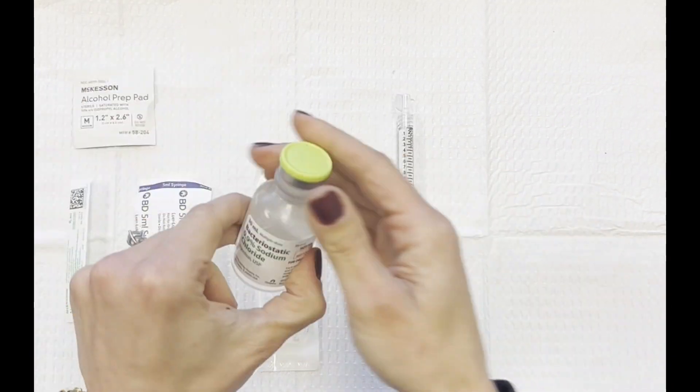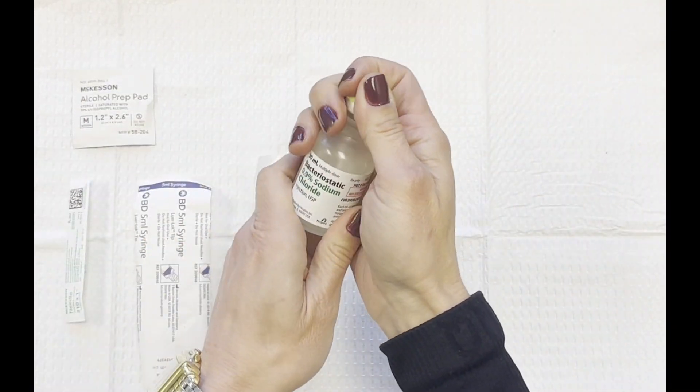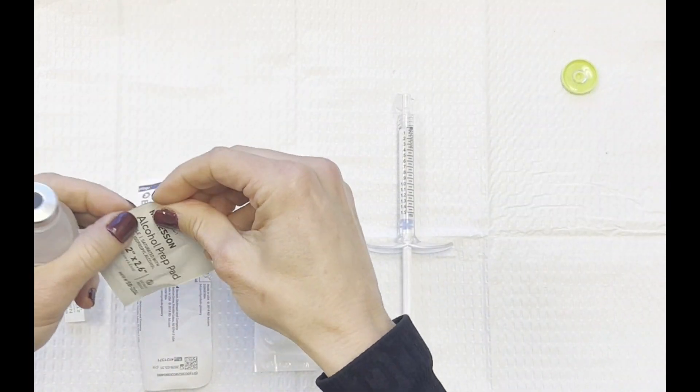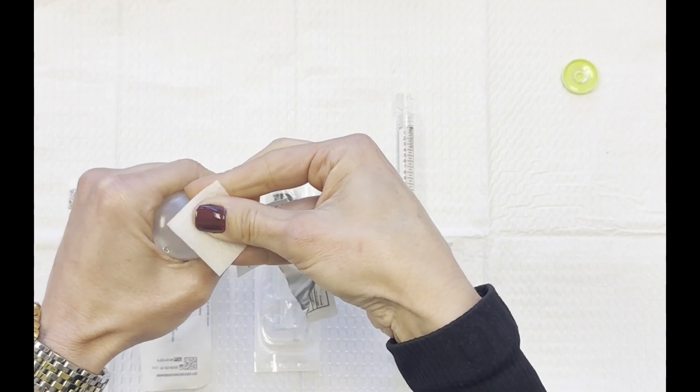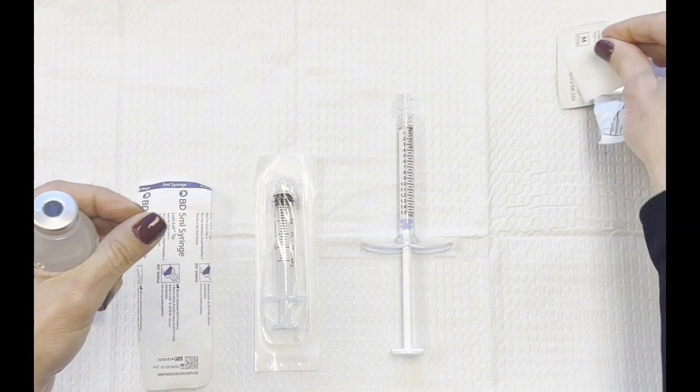I like to use either bacteriostatic normal saline or normal saline, whatever you have on hand. Clean the top as always, and I'm going to use a 21 gauge to draw up my normal saline.